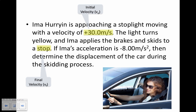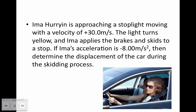I just saw a number there — negative 8.00 meters per second squared. That would be our acceleration. Now we have to figure out exactly what we need to solve for. It says determine the displacement of the car during the skidding process. So we're going to focus on the word displacement — that is our unknown. You need to always make sure you note what are the known variables and the unknown variables, or the variables that you are looking for.